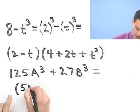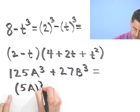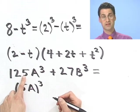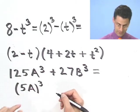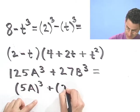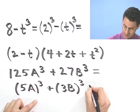Because in fact, this is 5a all cubed. 5 cubed is actually 125, because it's 5 squared, which is 25 times 5. And this is 3b cubed, all cubed.